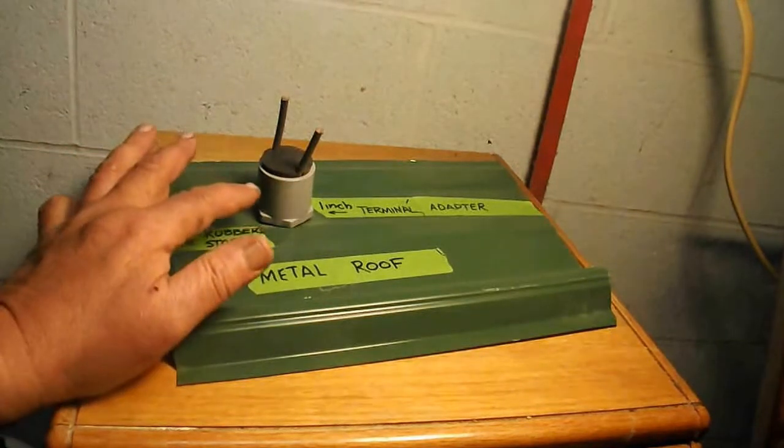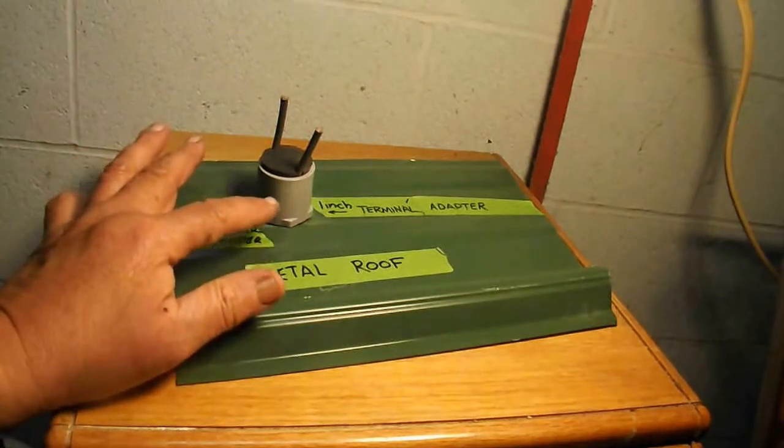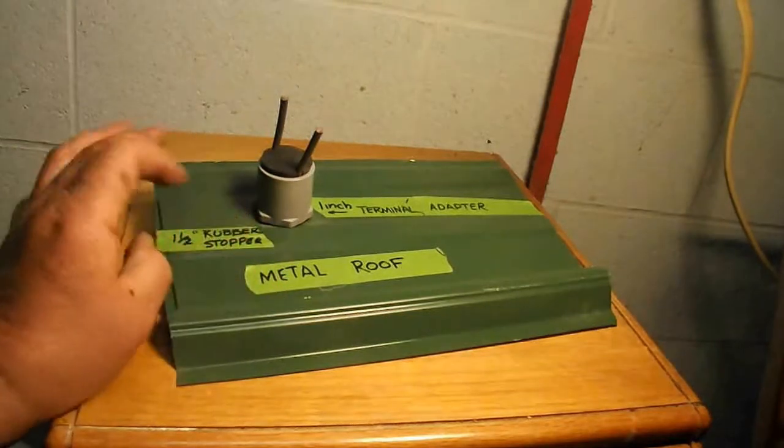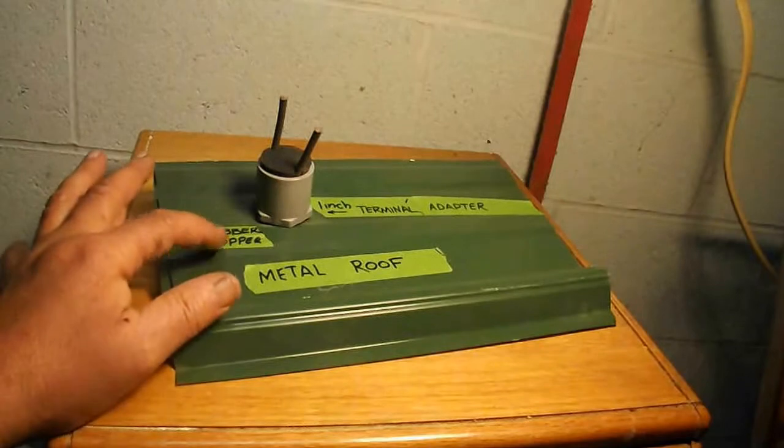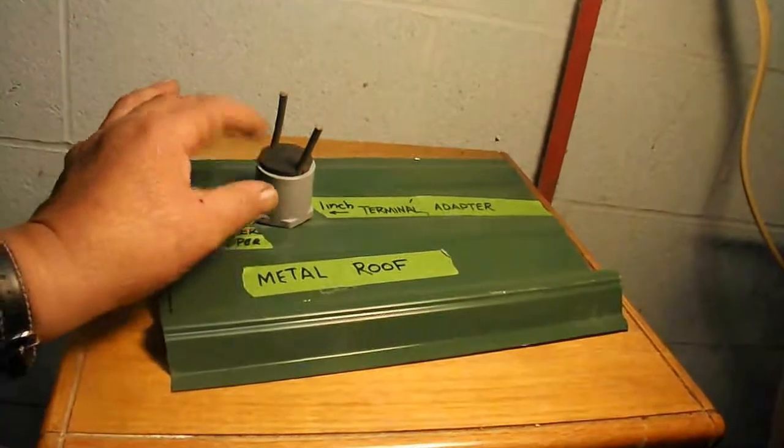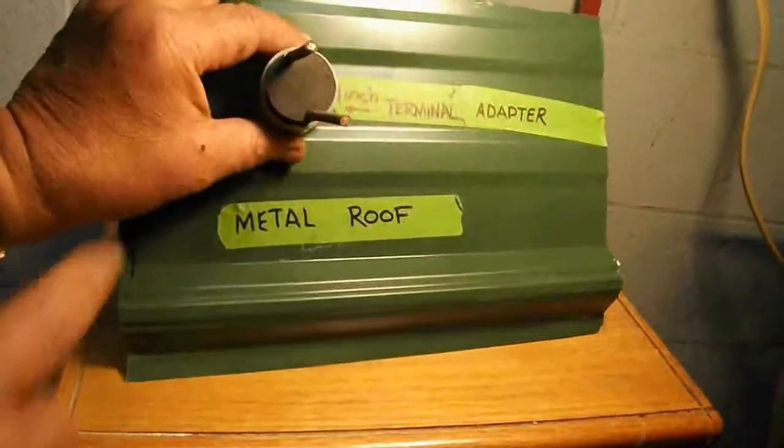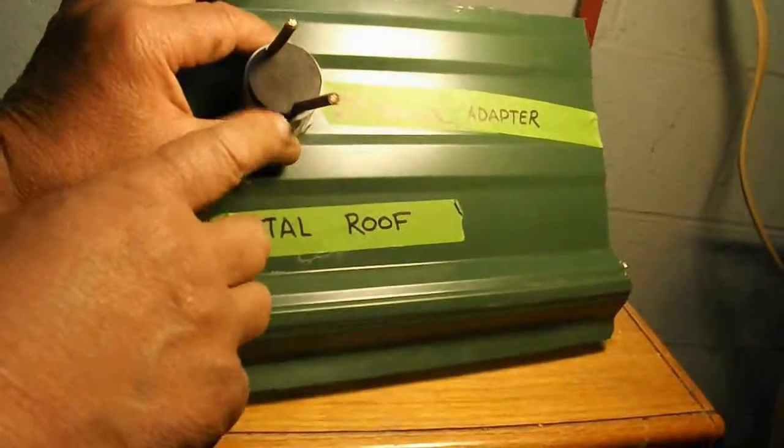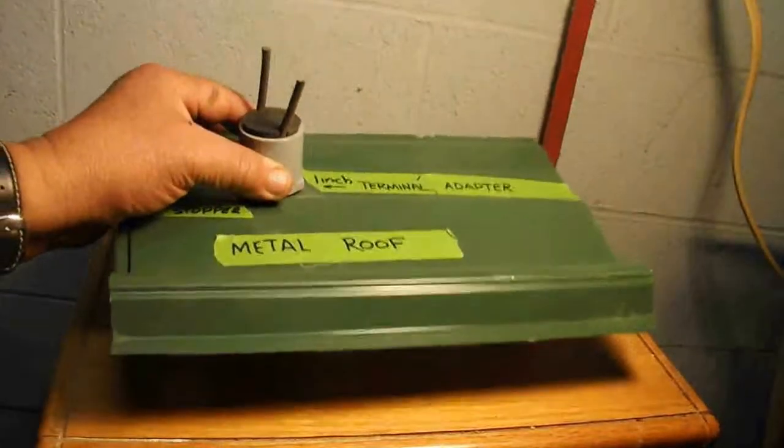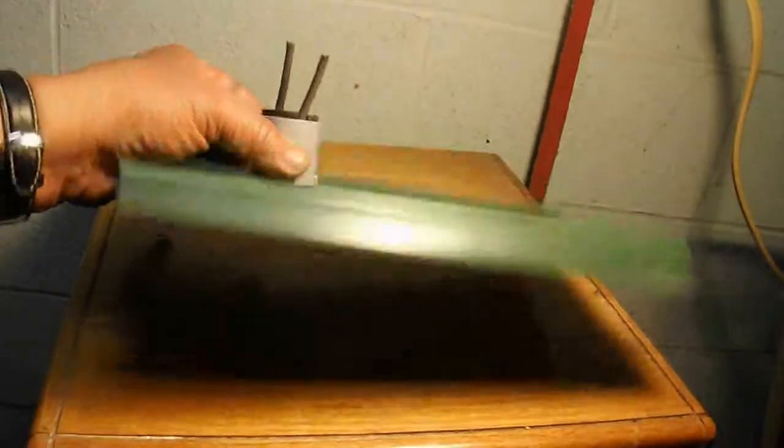What I bought is an electrical terminal adapter, it's a one inch. This is the metal roof and I bought a rubber stopper. The rubber stopper right here, I created grooves so the wires can pass through, not only the wires but the connectors can pass through.